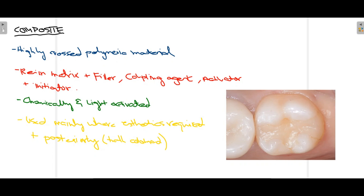Composite is a highly cross-linked polymeric material. Different components are present together forming a phase where composite is produced. It is mostly composed of a resin matrix, a filler part which enhances properties, a coupling agent which brings all materials together, and an activator/initiator which leads to formation of composite. Composites are of two types based on their activation system: chemically activated or light activated. With light activation, a light source is used and when composite is exposed to it, the reaction starts and it bonds to the tooth.